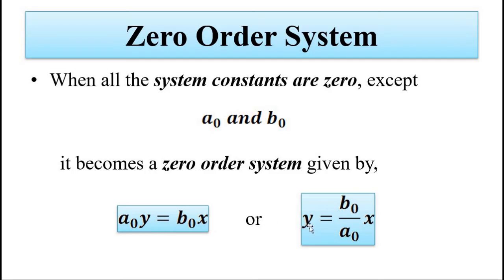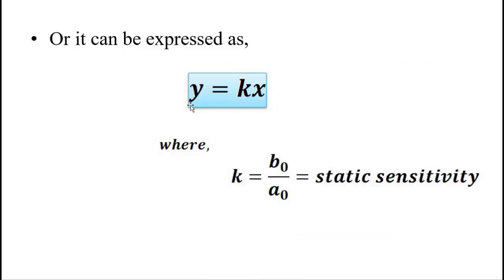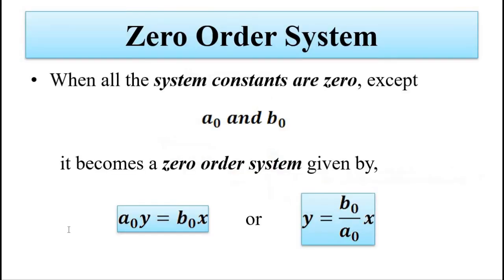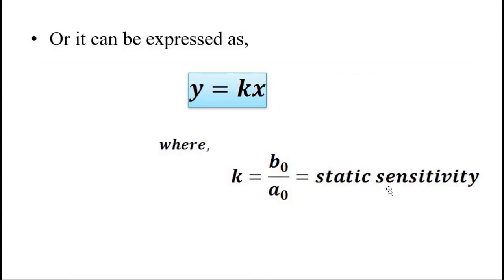In a zero-order system, all system constants are zero except a₀ and b₀. The system equation becomes a₀·y = b₀·x, which we can write as y = (b₀/a₀)·x, or simply y = kx, where k = b₀/a₀ is called static sensitivity.